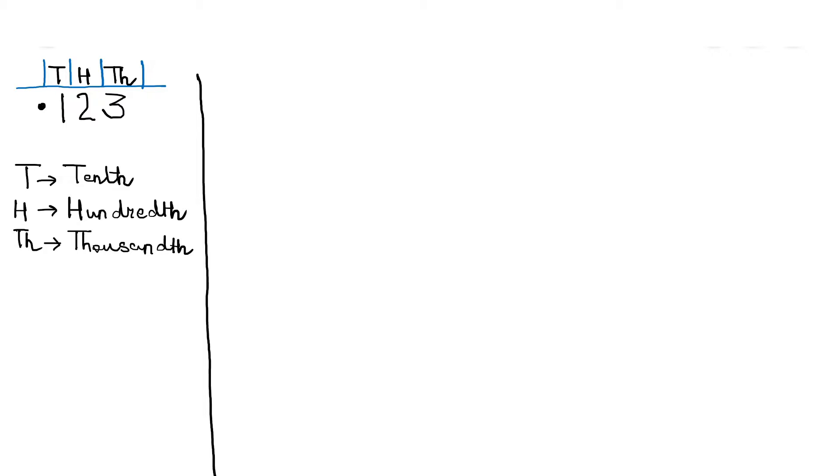The first digit after the point is known as the tenth digit or the tenths placed digit. The second digit which is 2 in this case is the hundredth digit or the hundreds placed digit. The third digit after the decimal point is 3 which also is known as the thousandth or the thousandths placed digit.